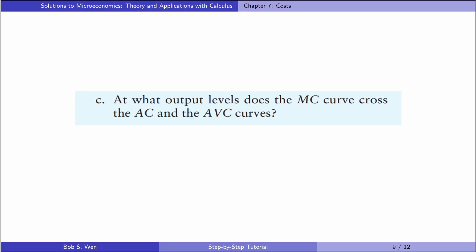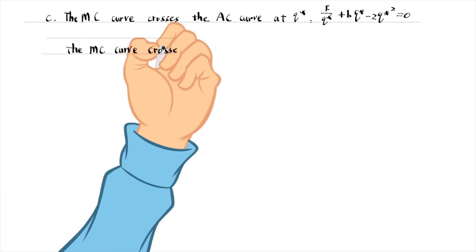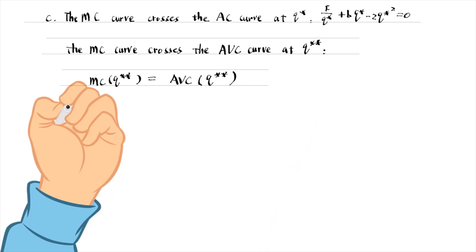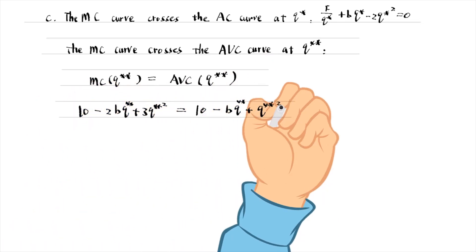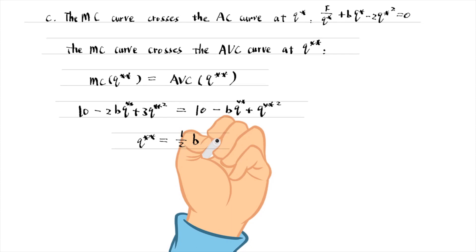In part C, at what output levels does the marginal cost curve cross the average cost and the average variable cost curves? The marginal cost curve crosses the average cost curve and the average variable cost curve at their minimums. We have already obtained the output level where the marginal cost curve crosses the average cost curve. We use the same method — equating the marginal cost with the average variable cost — to find the intersection. The output level is B over 2, which is also the lowest point of the average variable cost curve.